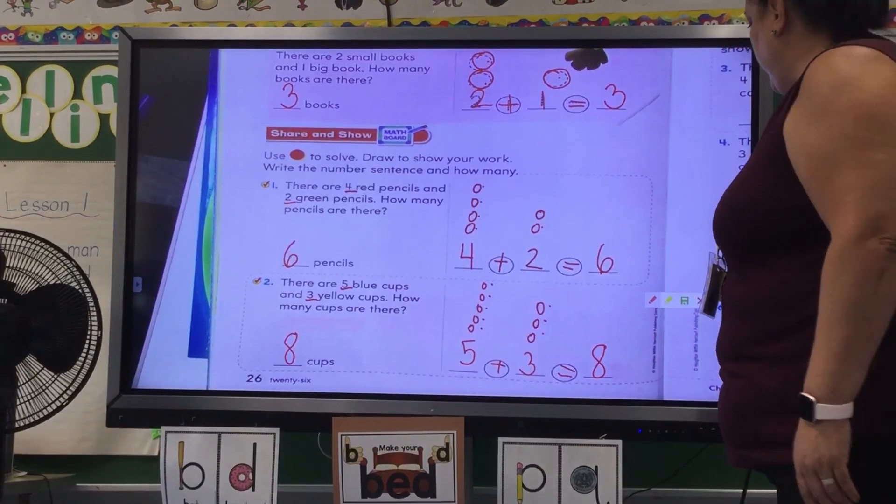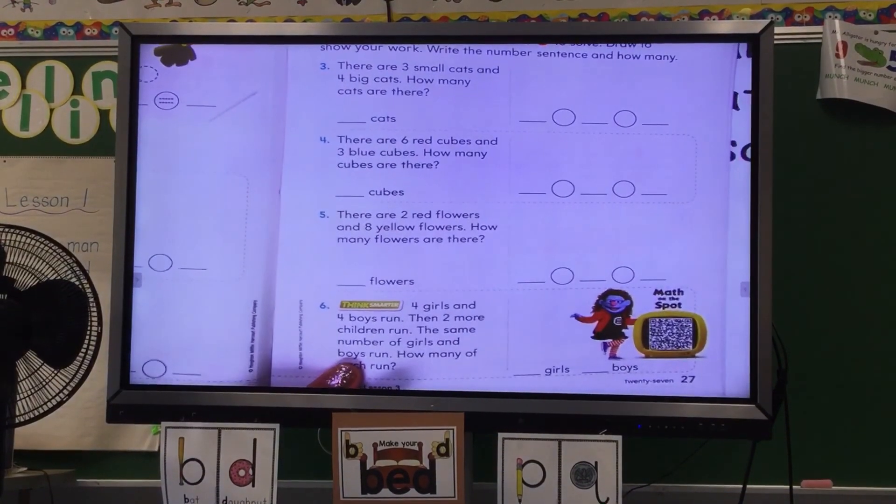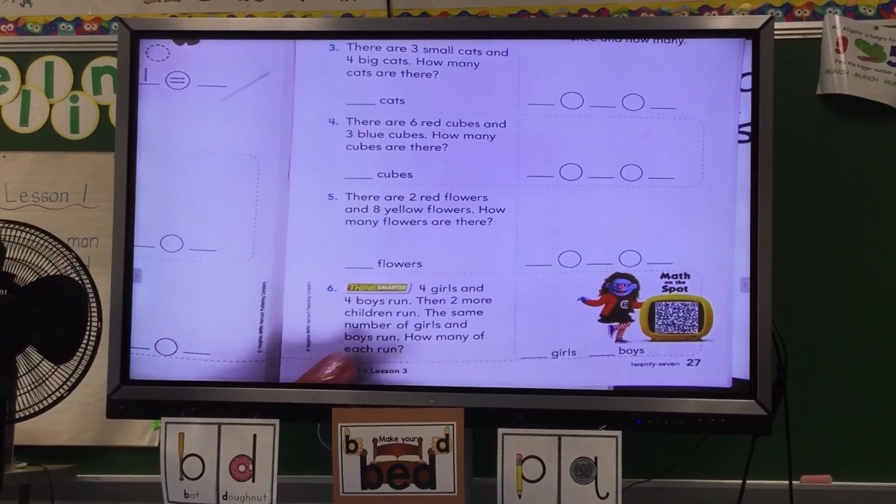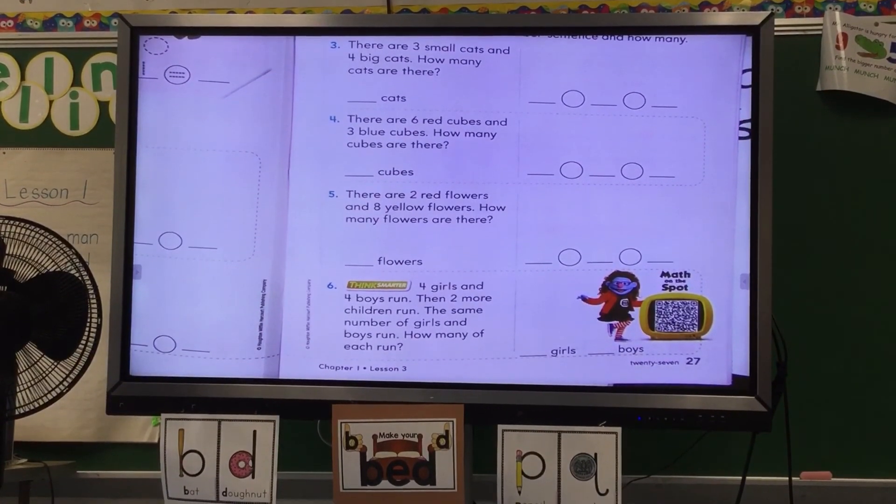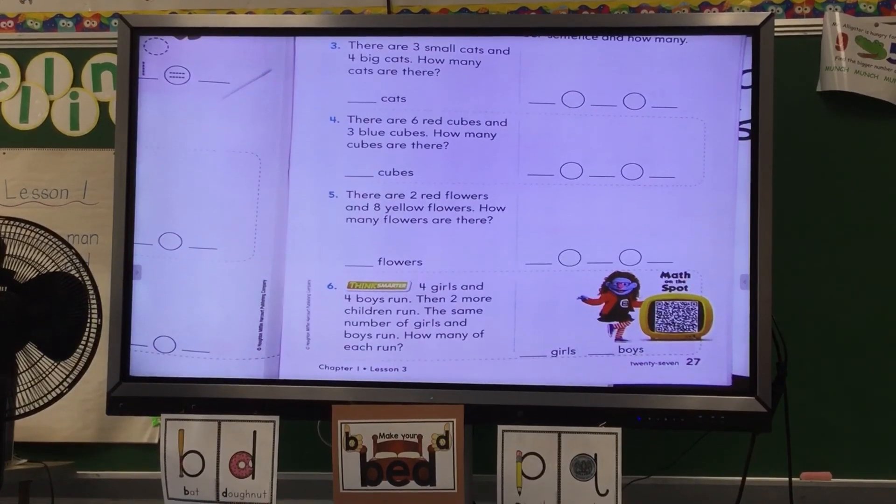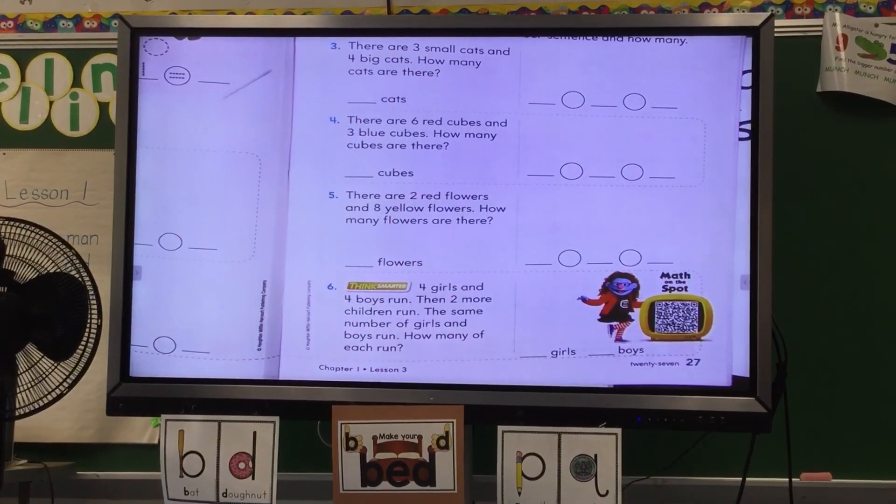Now what I want you to do, the next page, you are supposed to do this page on your own. Three, four, and five. Six is, I think, smarter. So I want you to pause the video, do three, four, and five, and six if you can, and then come back and we'll go over it.